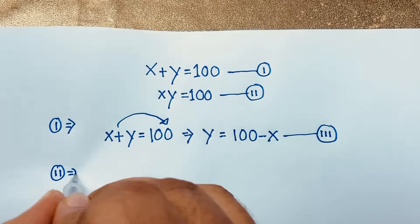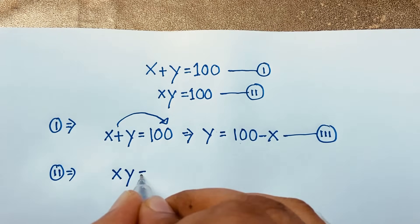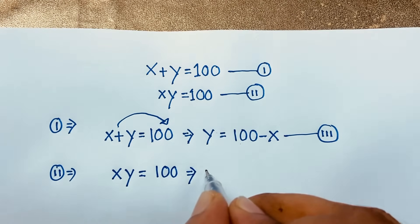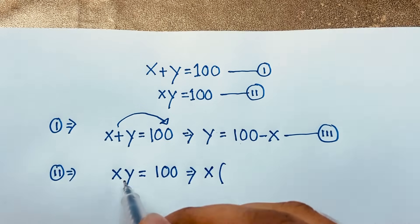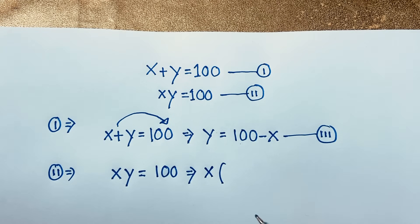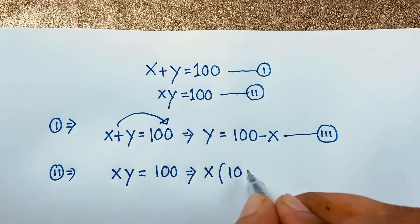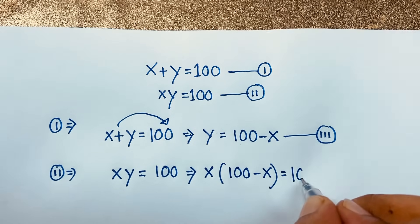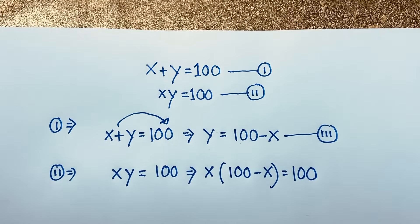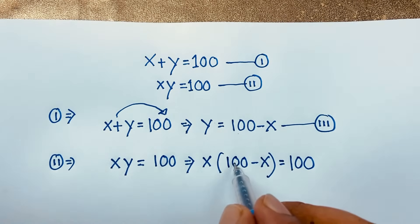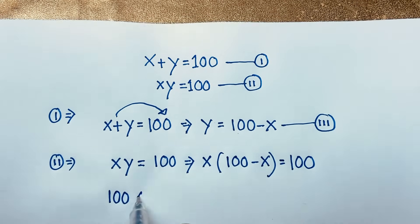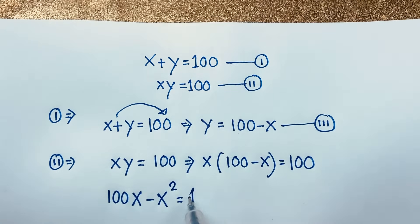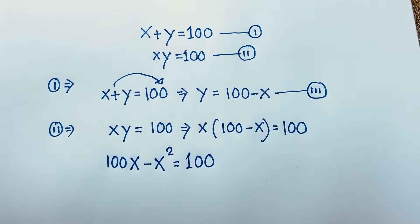Now our second equation is x times y equals 100. Remember that y is 100 minus x, so I can substitute: x times (100 minus x) is equal to 100. Expanding this, x times 100 is 100x, minus x times x is x squared, so 100x minus x squared is equal to 100.